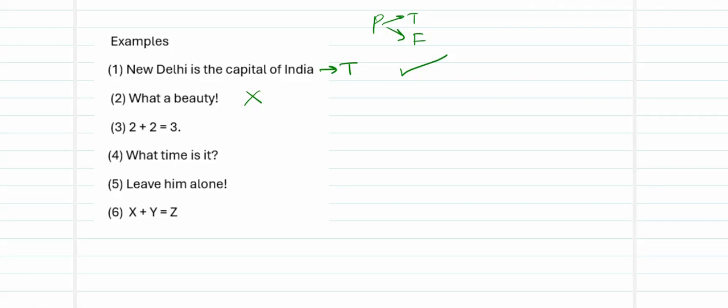'2 plus 2 is 3.' We know that 2 plus 2 is 4, but this is given as 3. Is it true? No. This takes the value false — only one clear output is generated. So, is this a valid proposition? Yes, this is a valid proposition, because it has a definite truth value.